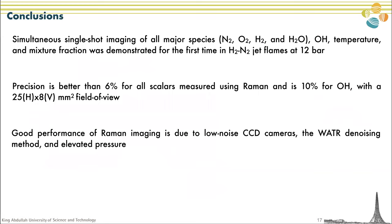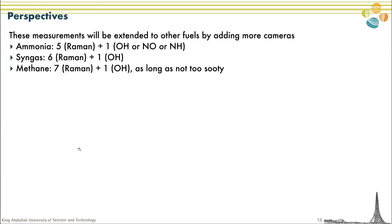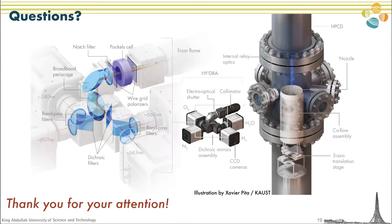In conclusion, we demonstrated the first simultaneous single-shot imaging of all major species, OH, temperature, and mixture fraction in hydrogen jet flames at 12 bar. We achieved precision better than 6% for all Raman scalars and 10% for OH, with a 25 by 8 mm field of view. We attribute the good performance to the use of low-noise CCD cameras, an advanced denoising method, and elevated pressure. This technique is not limited to hydrogen — it is technically possible to extend it to other fuels by adding more cameras: ammonia requires one more, syngas two more, and methane three more, as long as the flame is not too sooty. Thank you for your attention.